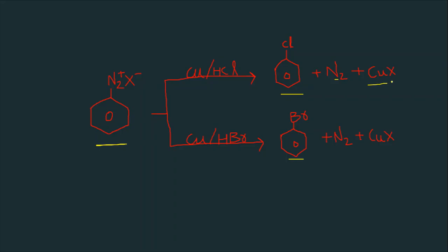This X here, if we use chlorine or bromine, we get CuCl and CuBr. Simply N2 plus X minus is replaced by chlorine if we use HCl and bromine if we use HBr. And this is our substitution reaction.